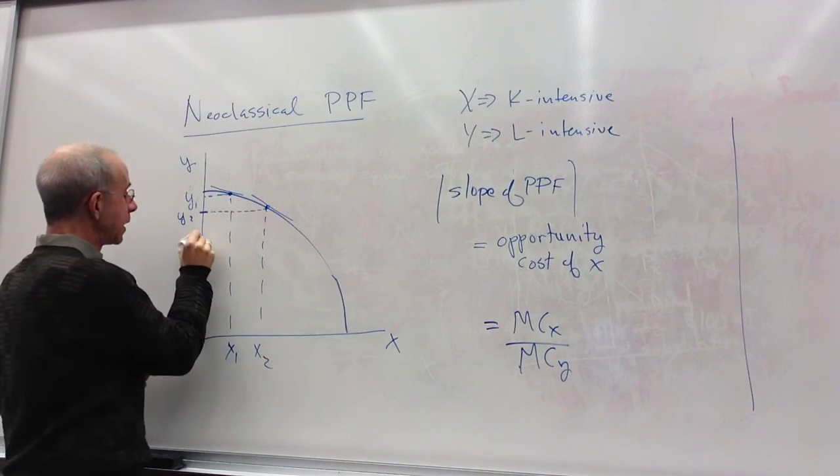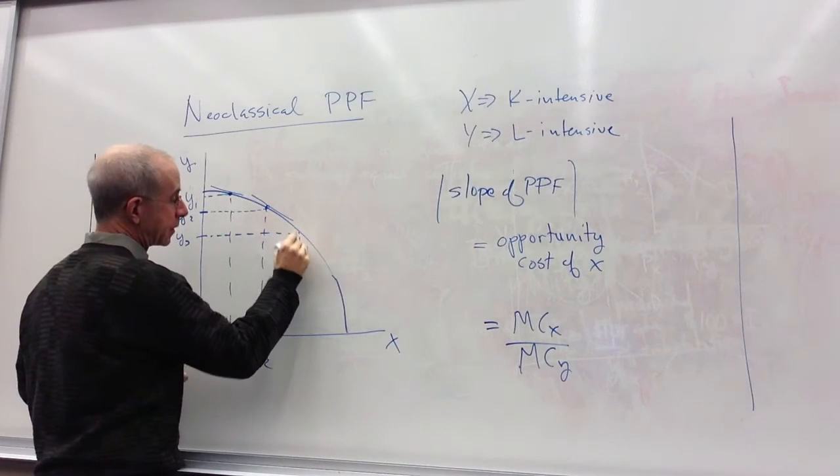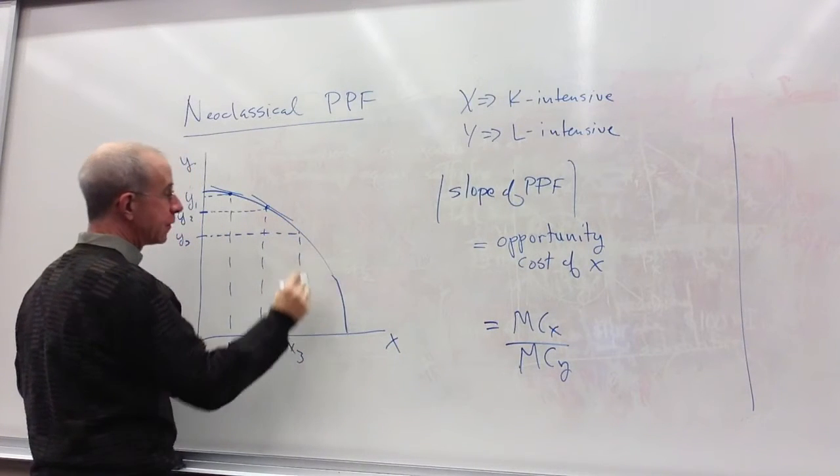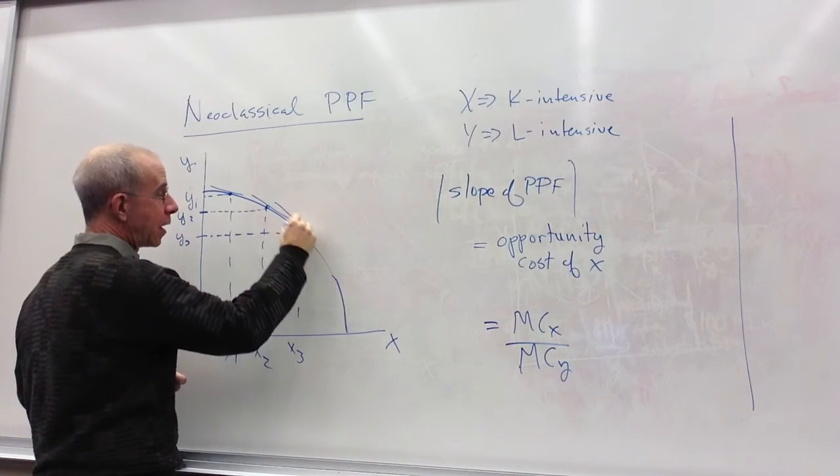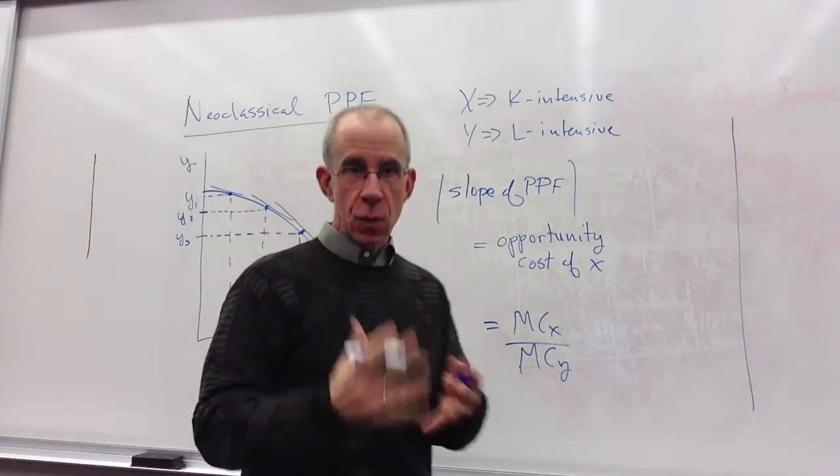This slope is changing. And if we increased the production of X even more, that trade-off increases. Slope goes up. So what's going on here?